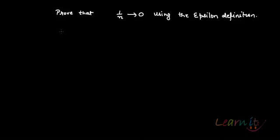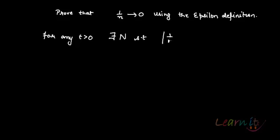Let us try to prove that 1/n as a sequence tends to 0 using the epsilon definition. So what does that mean? That means we have to prove that for any epsilon greater than 0, there exists a capital N such that |1/n - 0| is less than epsilon for all n greater than or equal to this benchmark capital N.